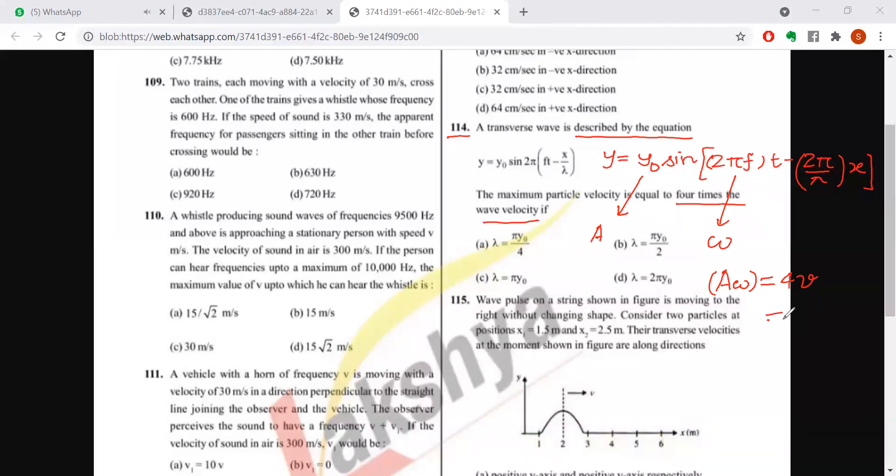Four times wave velocity means wave velocity is omega by k. So omega cancels out. That means the amplitude is 4/k.